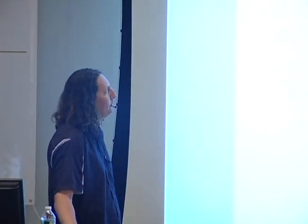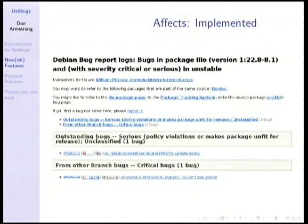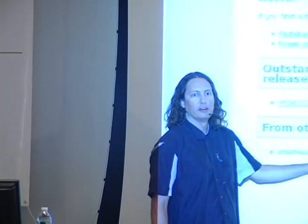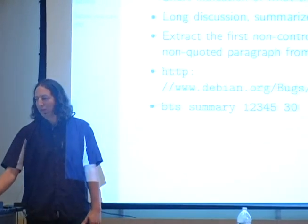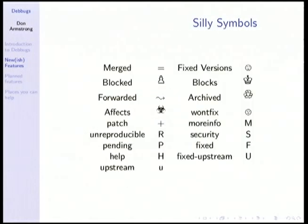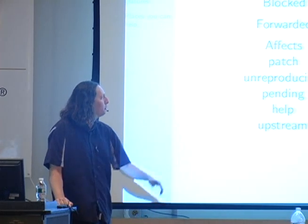Another thing you've probably already seen are the silly symbols. These are the icons that show up on bug pages. Almost all of them should have tooltips so you can hover over them and see what they are. This is the whole set: you can see if a bug has fixed versions, blocks — meaning it blocks another bug from being fixed — blocked, meaning it is blocked by another bug. Forwarded means it's been forwarded upstream. Effects means it's biohazardous. Won't fix is obviously unhappy. Most of these are already in use by the Termzimmer and RC bug status pages.